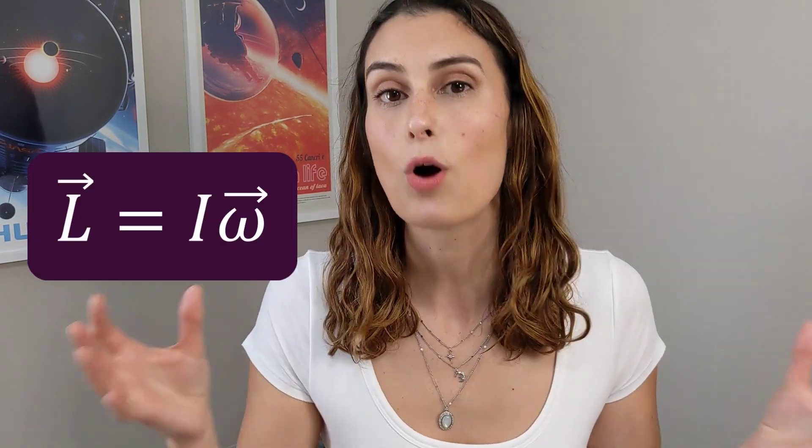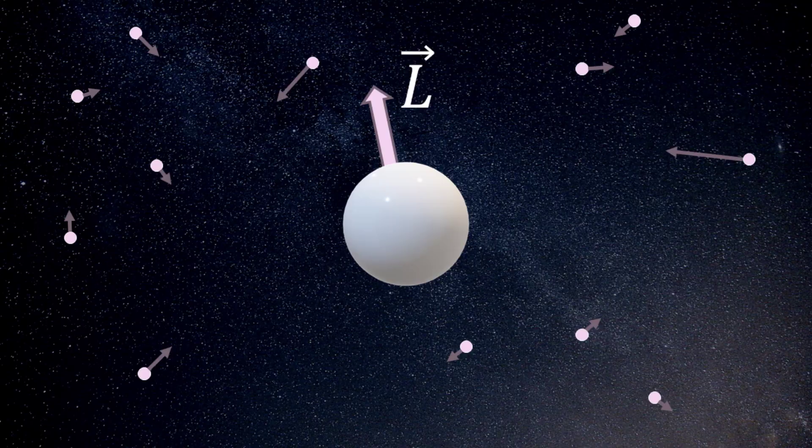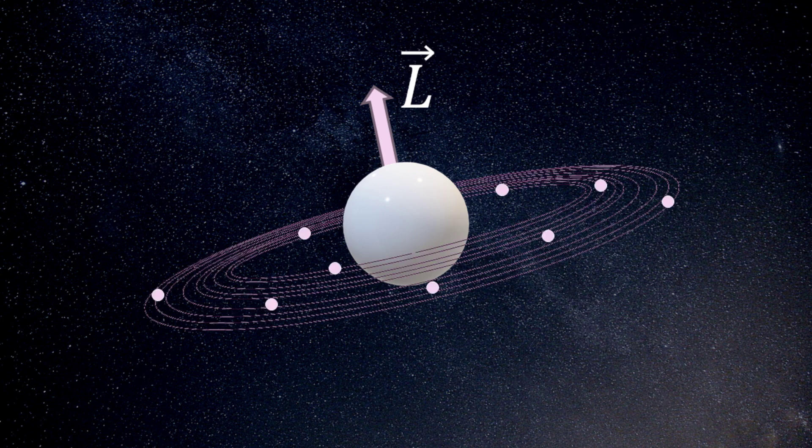And because those particles are getting closer to the central object, the moment of inertia of the entire system is going down, so the spinning is becoming much more significant. So that's how you start with a cloud of particles all traveling in random directions and end up with a disk of material that's all orbiting in the same direction.